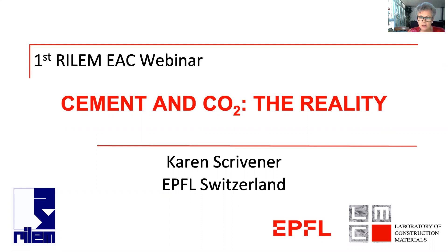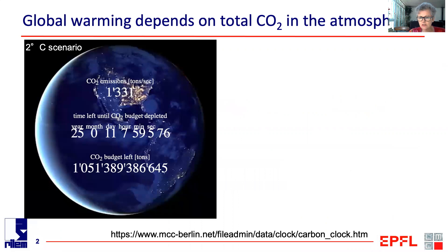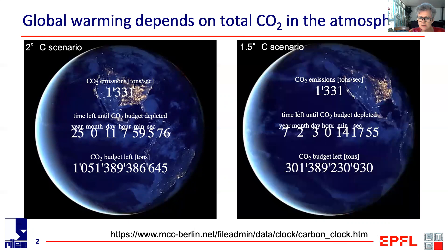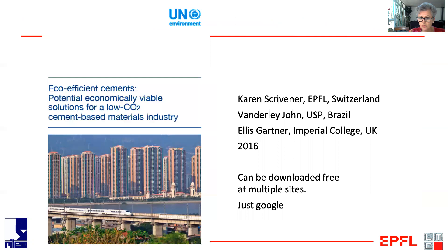We know that global warming is a very pressing problem, and it's really one of the total amount of CO2 in the atmosphere. This countdown shows that within as little as 25 years, we will have an amount of CO2 in the atmosphere calculated to lead to global warming of 2 degrees. And if we look at the 1.5 degree scenario, we'll see we're exceeding that amount in as little as 7 years. This means that clearly in the long run, we're going to have to find technologies that can actually take CO2 out of the atmosphere, but the more we can do now, the more we can save.